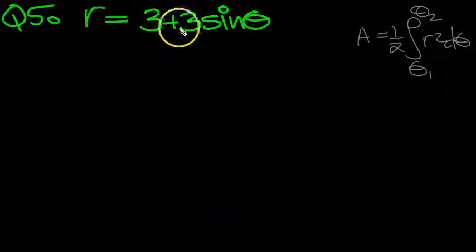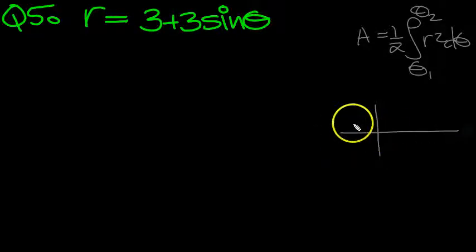We want to work out the area enclosed by r equals 3 plus 3 sine theta. So let's do a quick sketch of it before we work out the area.